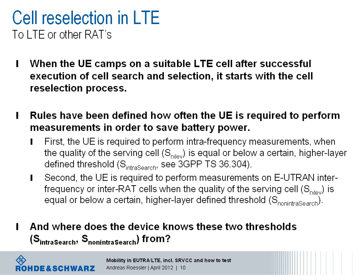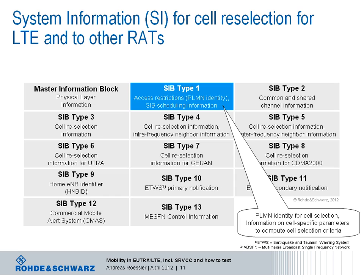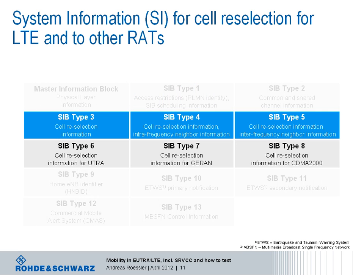But where does the device know these thresholds from? This brings us back to system information in LTE. We just learned about SIB type 1 for the cell selection process. For cell reselection and cell redirection to LTE and other radio access technologies, SIB types 3 through 8 are of importance. For LTE cell reselection in general — intra-frequency and inter-frequency — these are SIB types 3, 4, and 5.